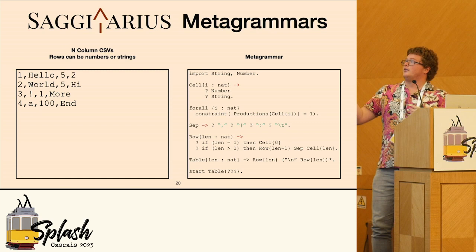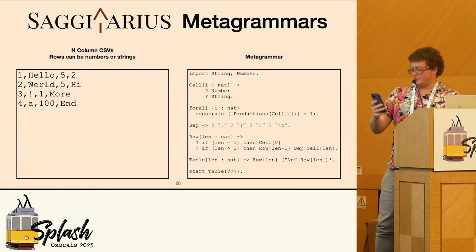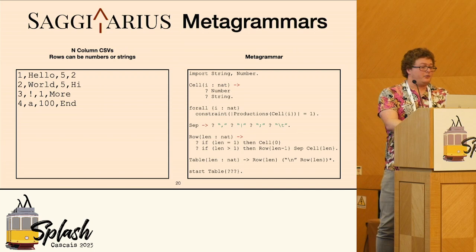So we start with the table and we ask, okay, what should we give to the table? You'd think, oh, it should be table of some number — but I don't know what number that is. So what we need to do is introduce a new construct, which is existential variables.